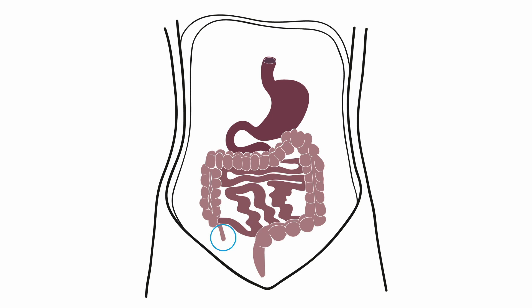A normal appendix has a subtle wall and a small diameter under 6 mm. It's also a mobile structure and can shift under pressure from a probe. When the appendix is inflamed, it becomes dilated and attaches itself to the other abdominal structures. The surrounding fat structures show stranding, pinpointing the pathology and pointing you directly toward the inflamed appendix.